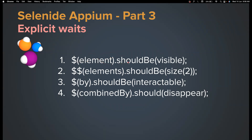Let's say you want to find an element and wait for it to become visible — you can use a simple one-liner. If you want to do driver.findElements, you can use double-dollar on a collection and wait for the number of elements to reach a size of two. If you want to wait for an element to be visible and clickable, you can use something like 'interactable'. You can also wait for an element to disappear using 'should become disappear'. So: should, should be, should have — these are all overloaded methods doing the same thing.